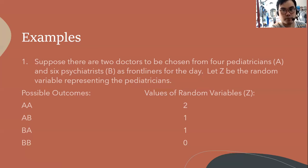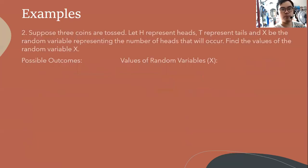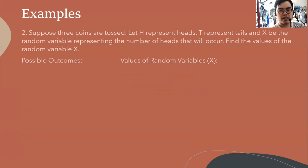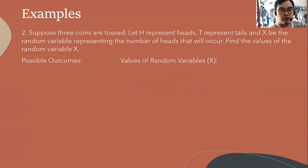For the second example, suppose three coins are tossed. Let H represent heads, T represent tails, and X be the random variable representing the number of heads that will occur. Find the value of the random variable X. The random variable represents the number of heads, so we assign X as the representative and list the possible outcomes.